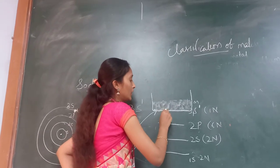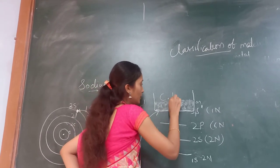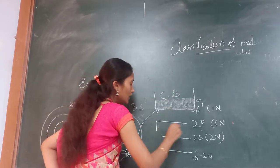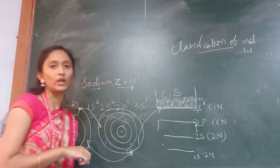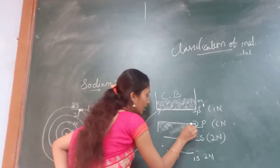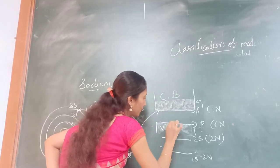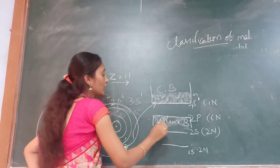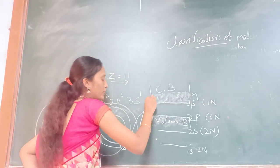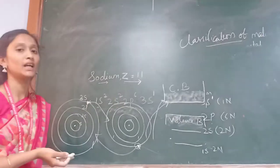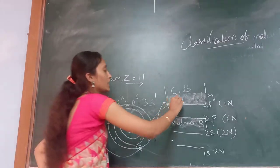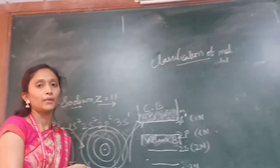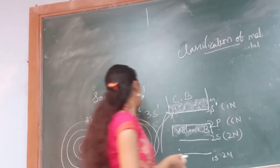Whatever free or empty states are present, we call that band the conduction band. Whatever is fully bonded below the conduction band, we call that the valence band. When we apply an external source or thermal energy, the free electrons bond and the conduction band and valence band overlap, and the conductivity process runs.